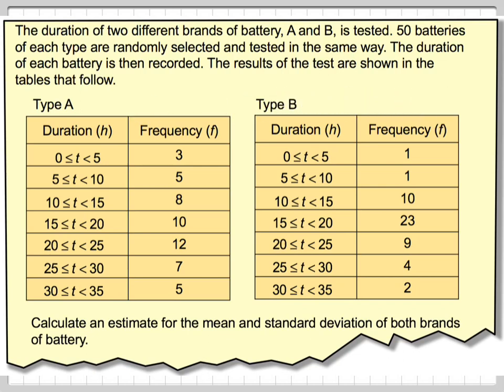So this is data for Type A, this is the data for Type B. Calculate an estimate for the mean and standard deviation of both brands of batteries. We're going to do this two different ways.